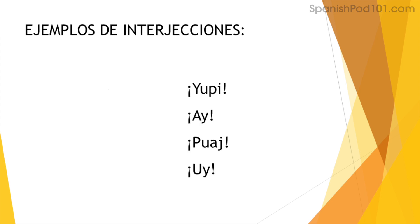The last category: interjecciones — interjections. Interjections are like sounds we make to express how we feel or to get someone's attention. We have these in English too — like 'hey' or 'hooray.' In Spanish, examples include: yuppi — meaning 'yay,' expressing excitement; ay — meaning 'ouch,' when you're in pain; buah — when you're disgusted by something; and uy — the sound of regret, like when you've forgotten something.